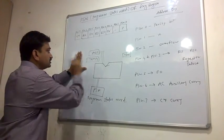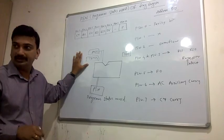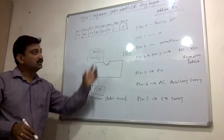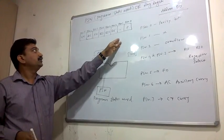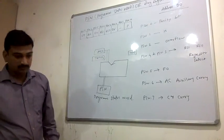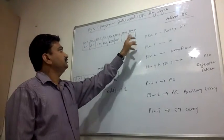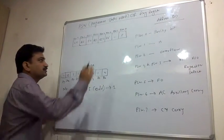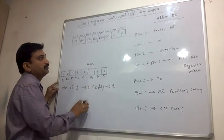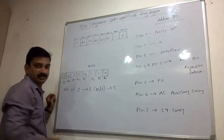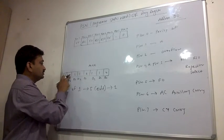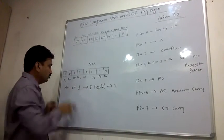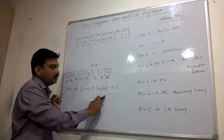The PSW is also bit-addressable, meaning you can handle or check a single bit without dealing with the whole register. Now, PSW.0 is the parity bit. The function of the parity bit is to reflect the status of the accumulator based on the number of ones in it. For example, if the accumulator contains 10110110, there are five ones — five is odd — so the parity bit becomes one.